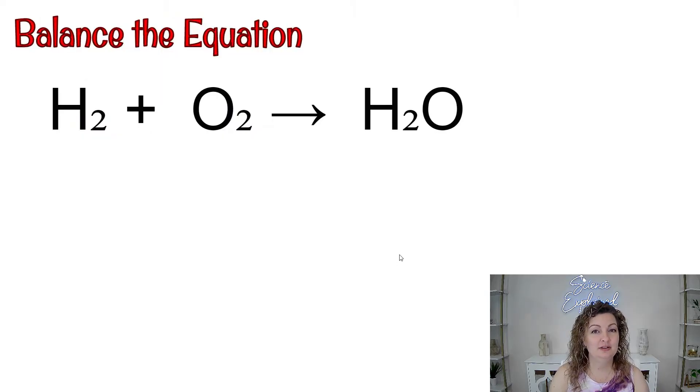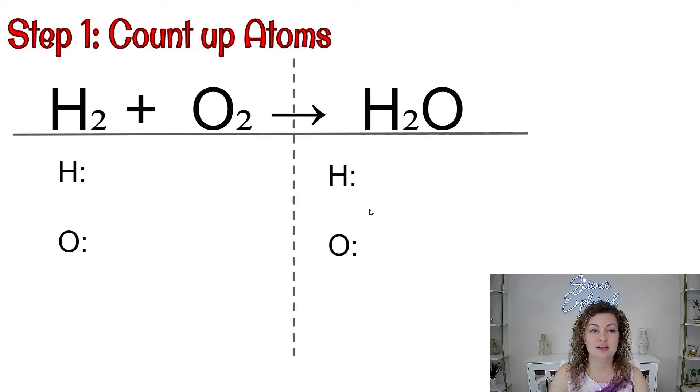So we're going to start off with our generic equation, and we have H2 plus O2 yields H2O, and if you notice, this isn't balanced, right? So the first thing we do, we have to count up our atoms to ensure that it really isn't balanced.